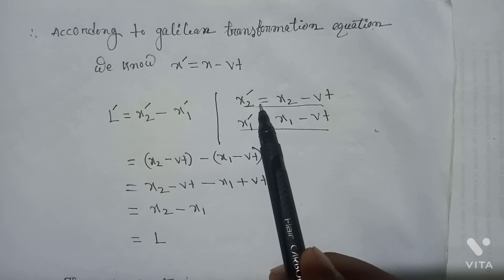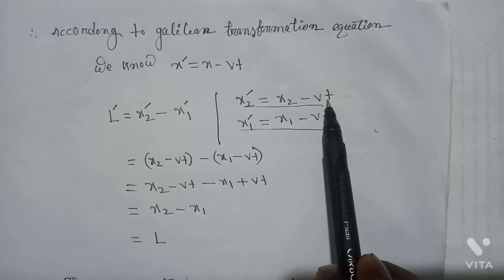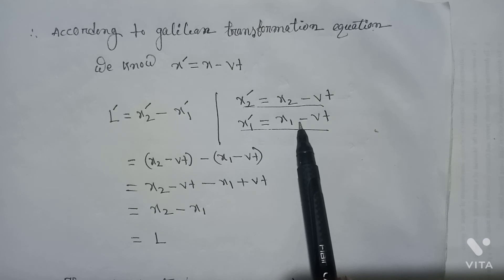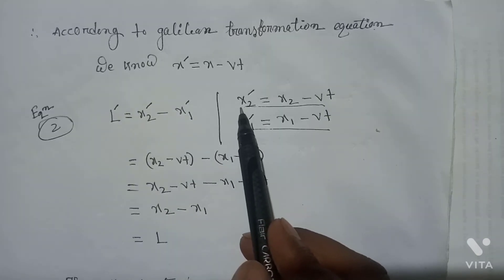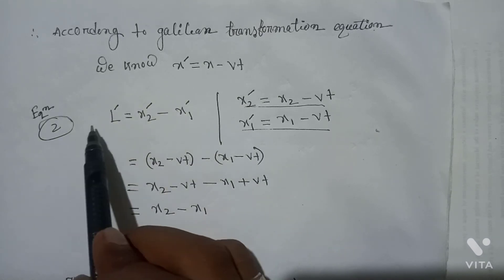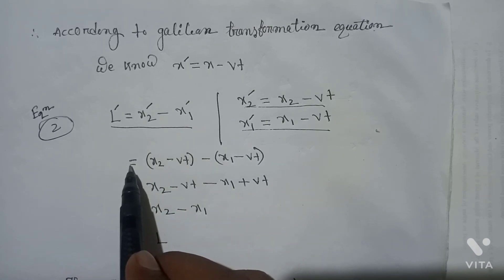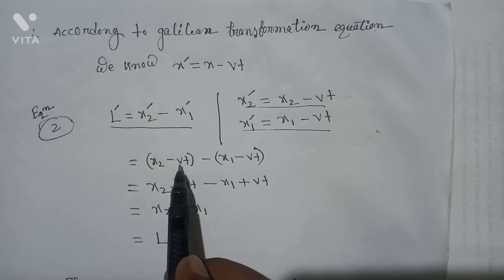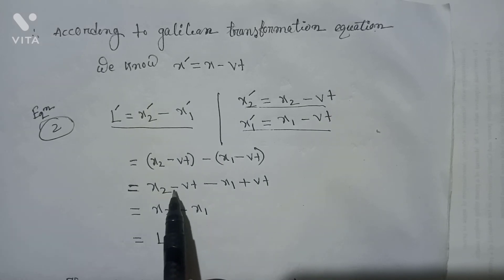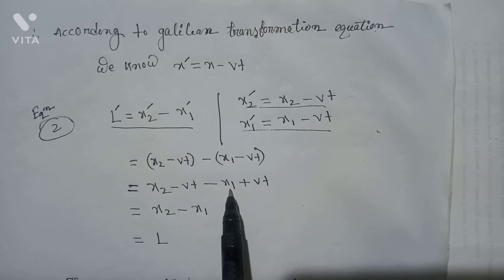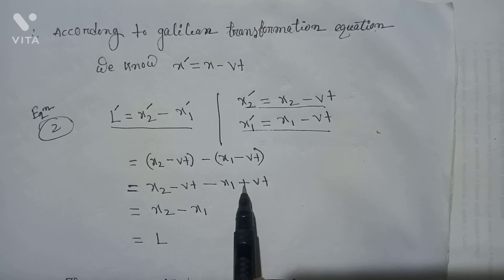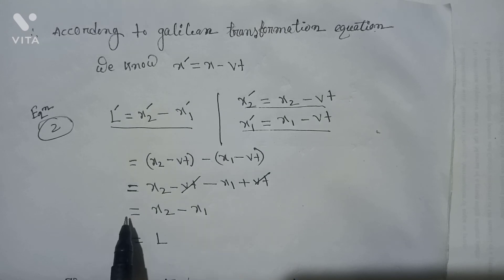We have L' = x'₂ - x'₁ = (x₂ - vt) - (x₁ - vt) = x₂ - vt - x₁ + vt. Here -vt and +vt get cancelled, which equals x₂ - x₁, which equals L.